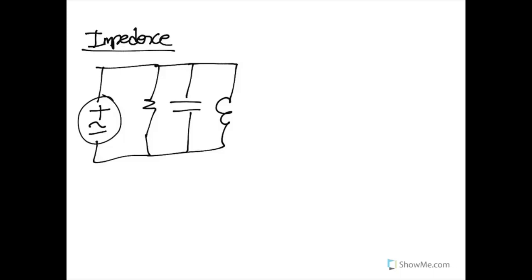Now let's put our phasors that we've created into use when discussing the concept of impedance. We have an AC circuit where this voltage source will constantly oscillate and affect all of the components in the circuit, including the resistor, the capacitor, and the inductor. Previously we've seen how with resistors the relationship between voltage and current is rather straightforward — everyone's favorite law, Ohm's law: V equals IR.